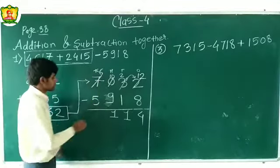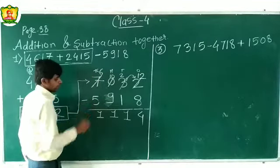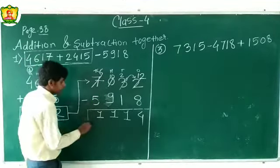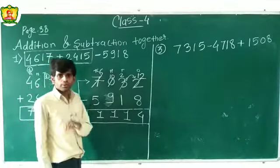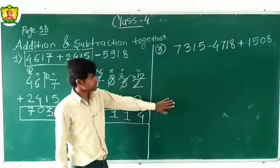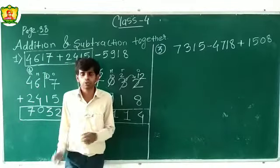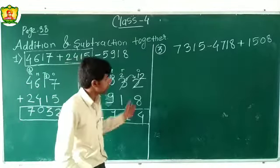Six minus five gives us one. So in this way we can solve addition and subtraction together, step by step. Understood everyone?